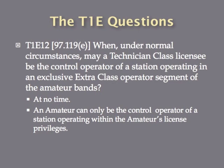When, under normal circumstances, may a technician class licensee be the control operator of a station operating in an exclusive extra class operator segment of the amateur bands? The answer is at no time — never. If you are a technician class control operator, you can only operate within the bounds of your technician class license privileges. You cannot go into a general class or an extra class privilege segment of the amateur bands.